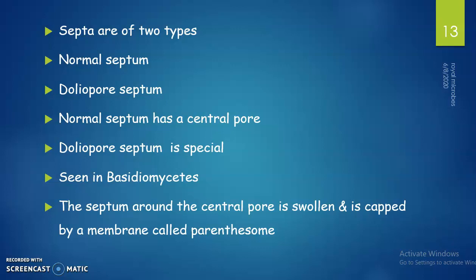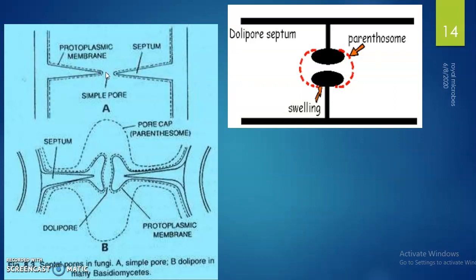Septa are of two types: normal septum and dolipore septum. The normal septum has a central pore. The dolipore septum is special and is seen in basidiomycetes, such as mushrooms. The septum around the central pore is swollen and is capped by a membrane called the parenthesome.